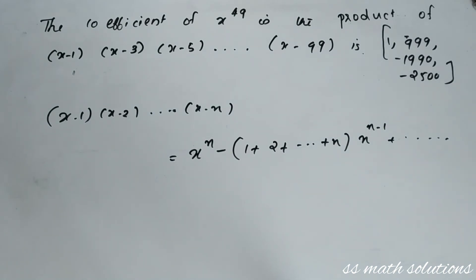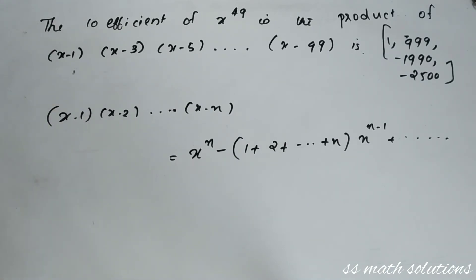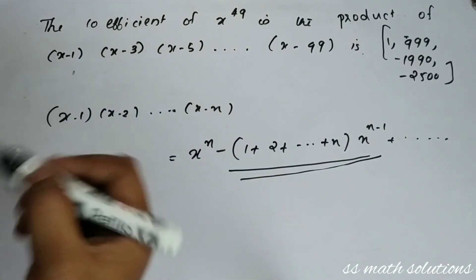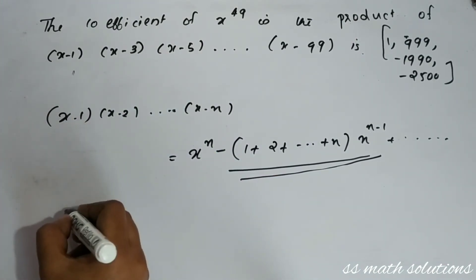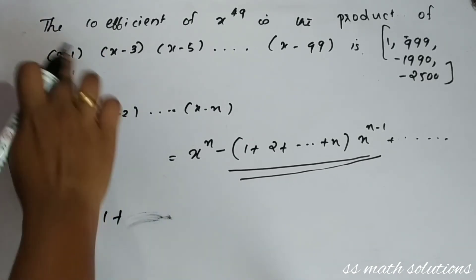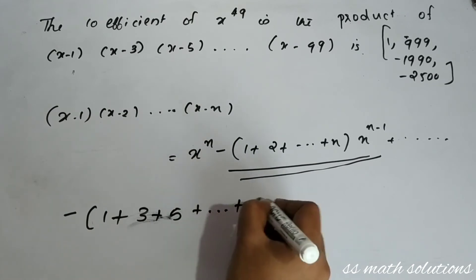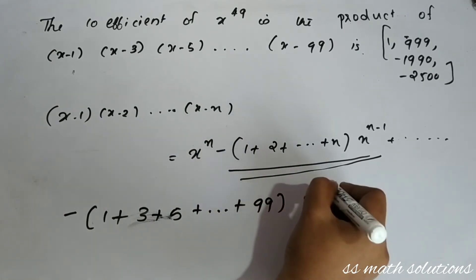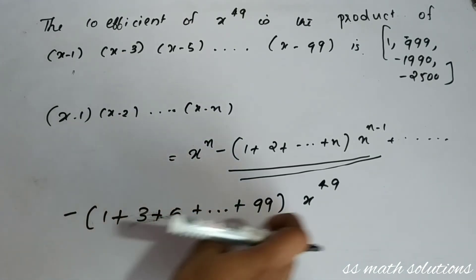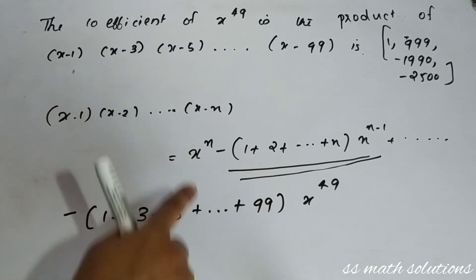We need the coefficient of x^49. Using that expansion structure, we write our expression as minus of (1 + 3 + 5 + ··· + 99) times x^49. So we need to find the sum 1 + 3 + 5 + ··· + 99.